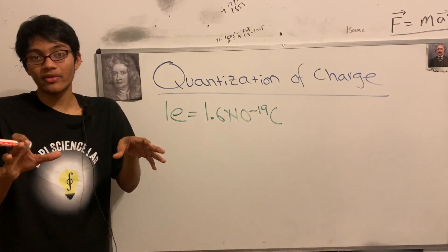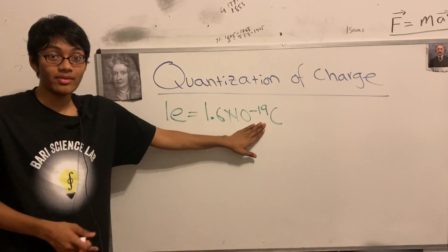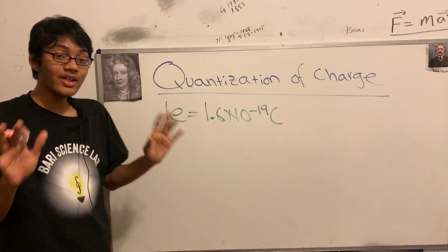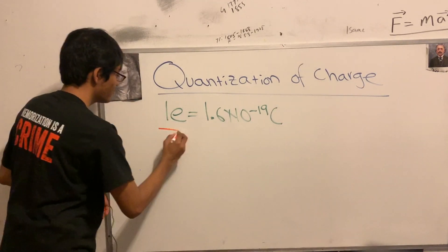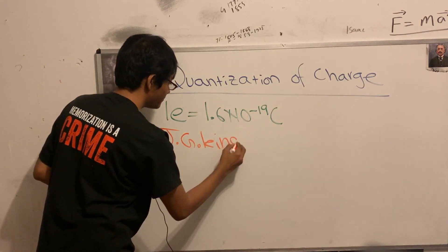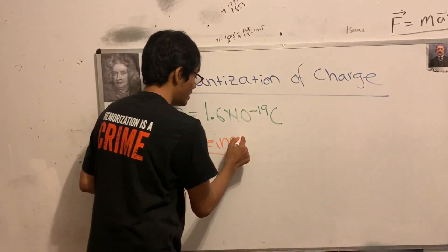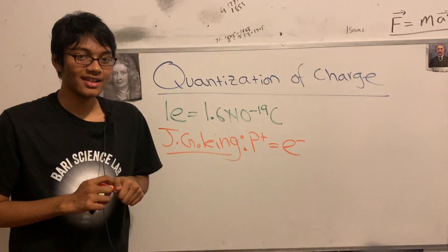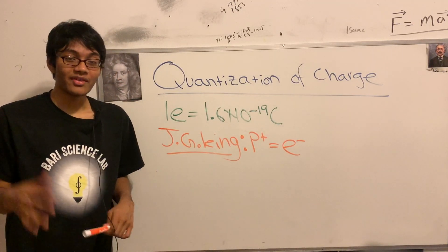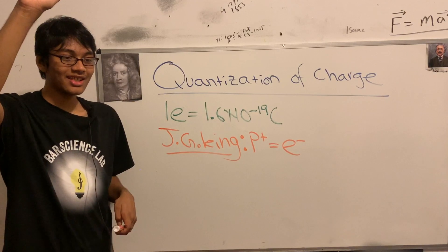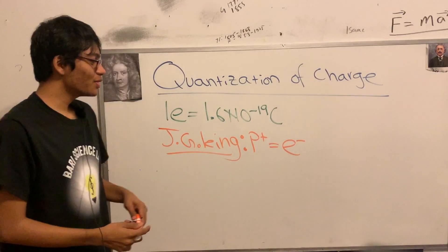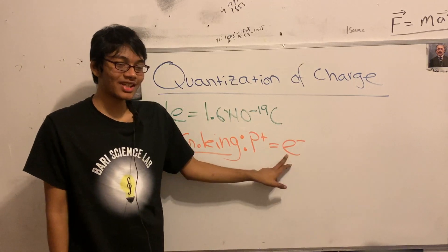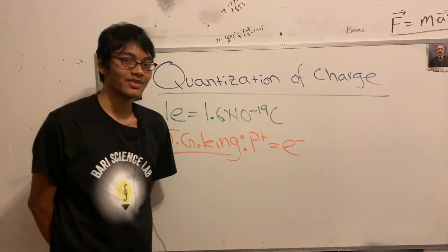All charges in the observable universe are going to be multiples of the charge carried by one electron, which is 1.6 times 10 to the minus 19 coulombs. There was a very nice experiment done by J.J. King in 1960 that demonstrated this fact — the quantization of charge. He showed that the charge carried by a proton is equal to the charge carried by an electron. Today we're going to try out that experiment. How would you show that? How do you know the proton and the electron have the same charge?